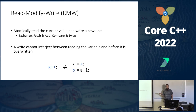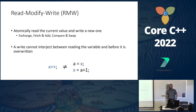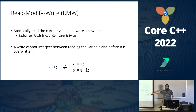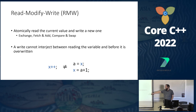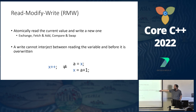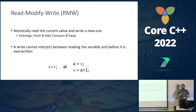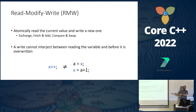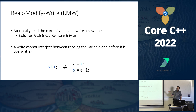Another thing we can do with atomics is read-modify-write operations: read the current value and possibly change it atomically, so no other write can interject in between. For example, x++ done atomically is completely different from the non-atomic read-increment-write sequence. We have fetch-and-add for incrementing, exchange which writes a new value and returns the old one, and compare-and-swap which changes the value only if it equals something we expect — a really powerful building block.